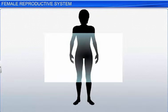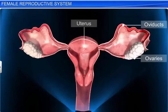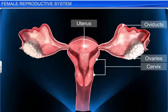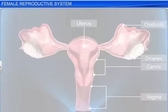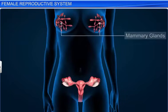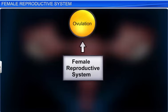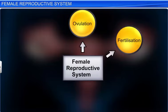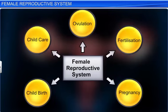The female reproductive system includes the ovaries, oviducts, uterus, cervix, vagina, and the external genitalia, located in the pelvic region. Along with a pair of mammary glands, it supports the process of ovulation, fertilization, pregnancy, childbirth, and child care.